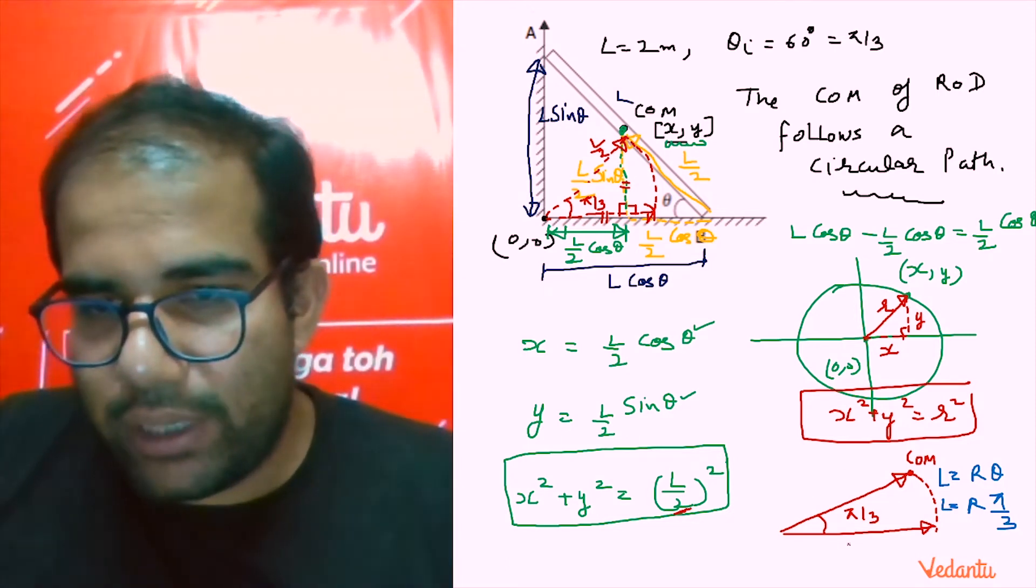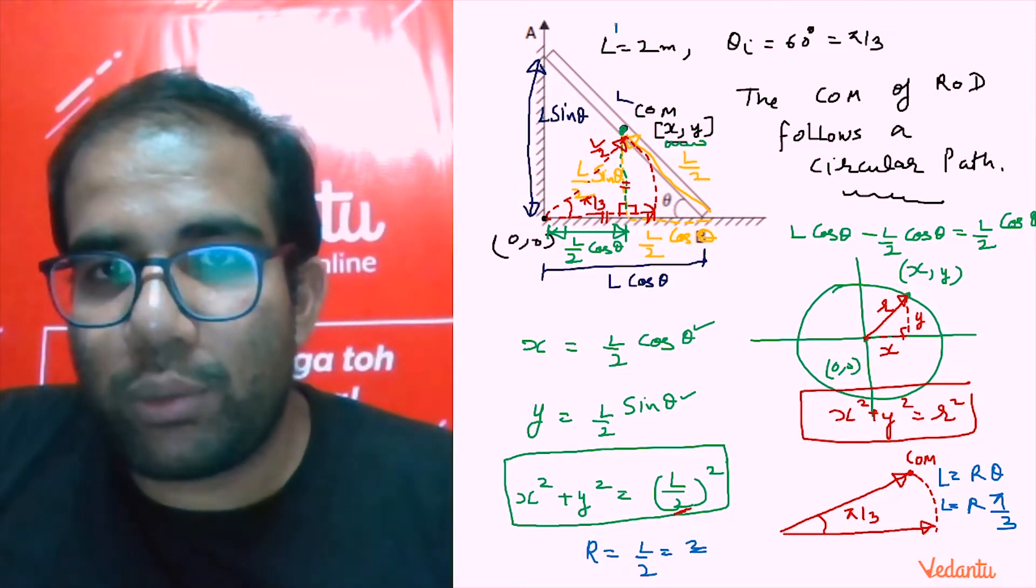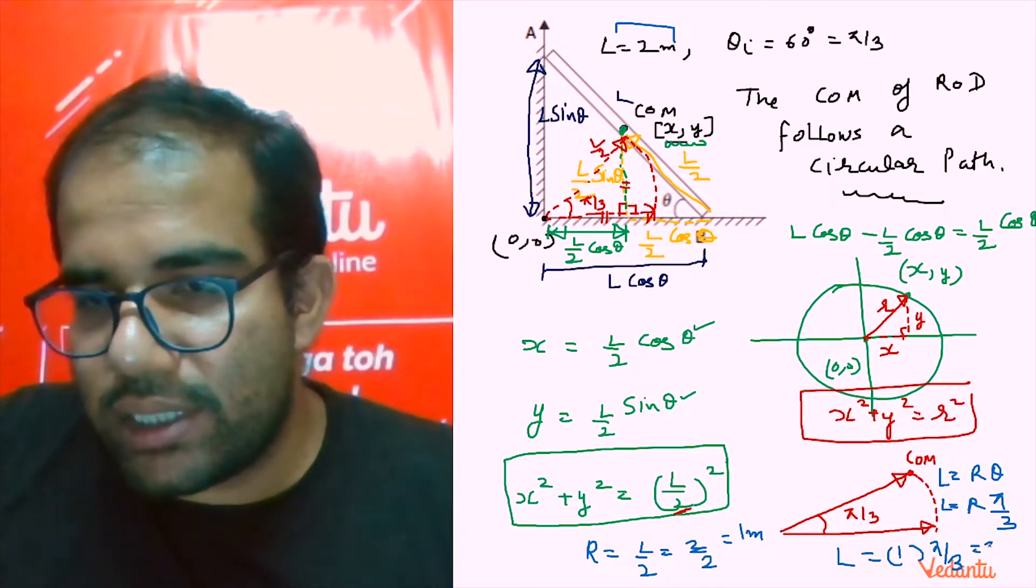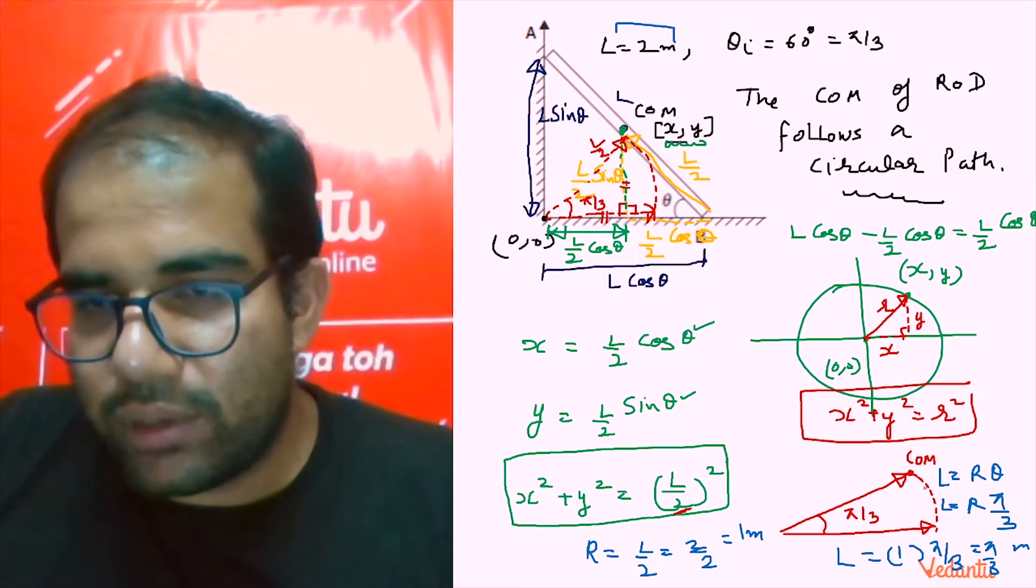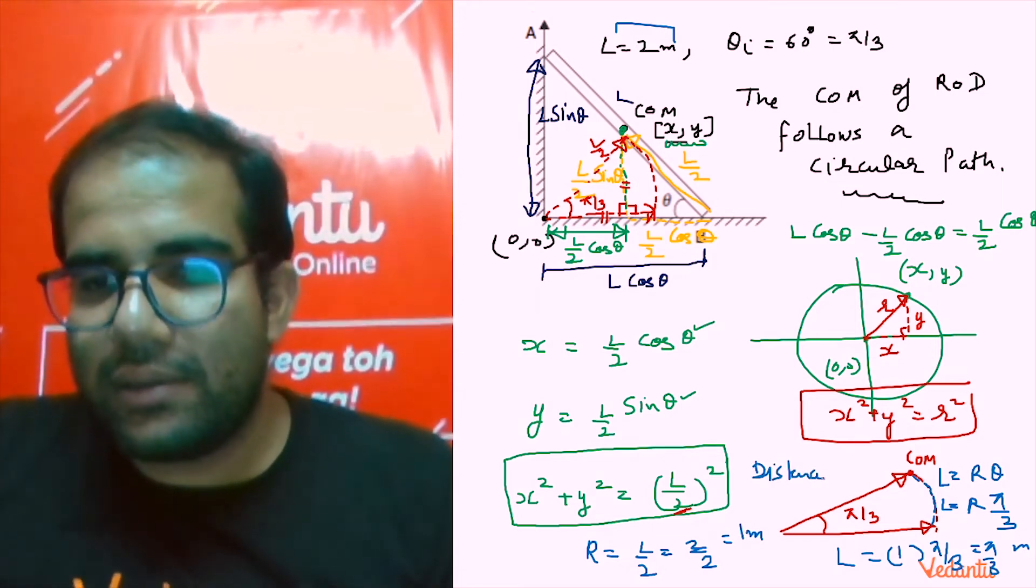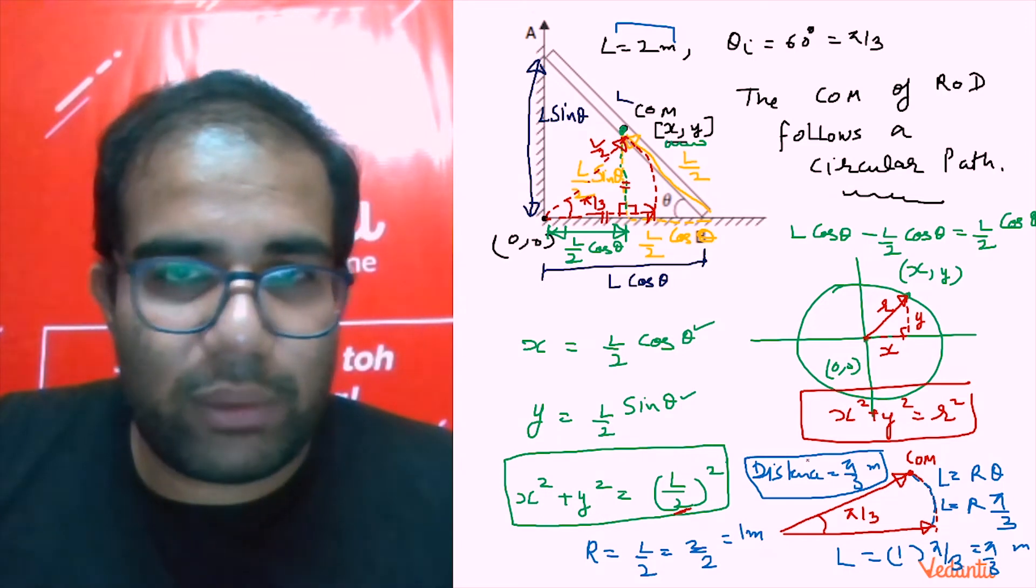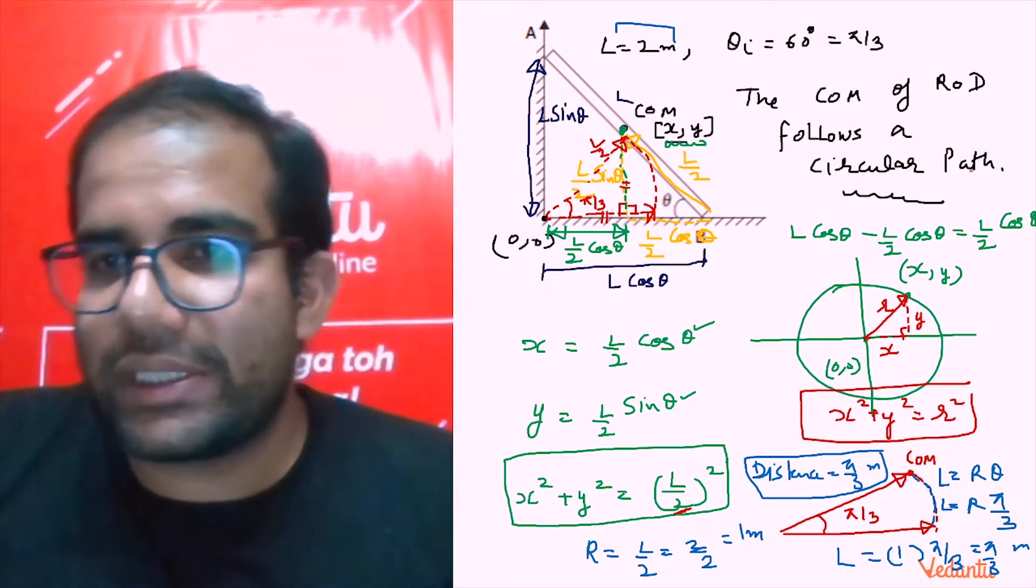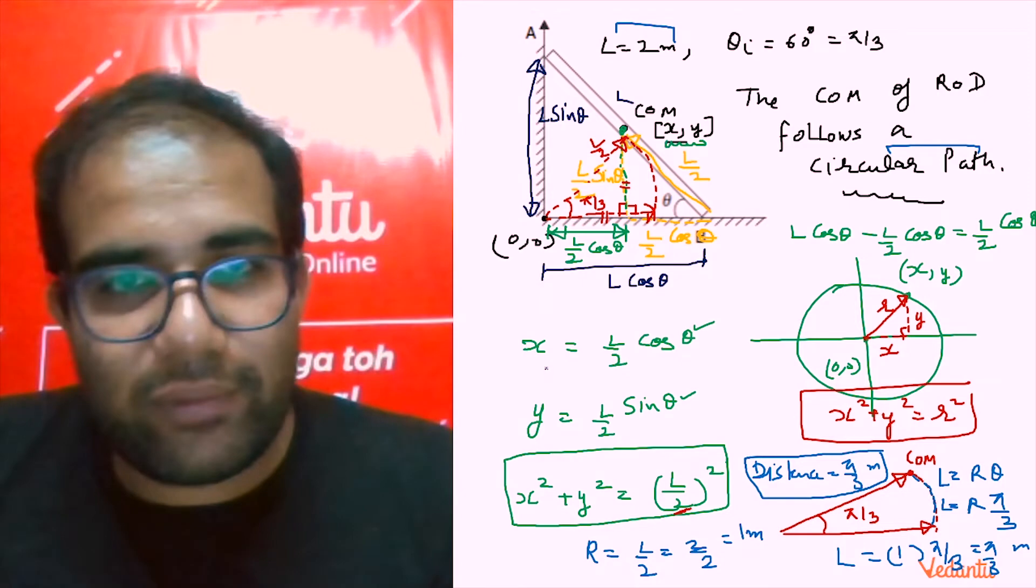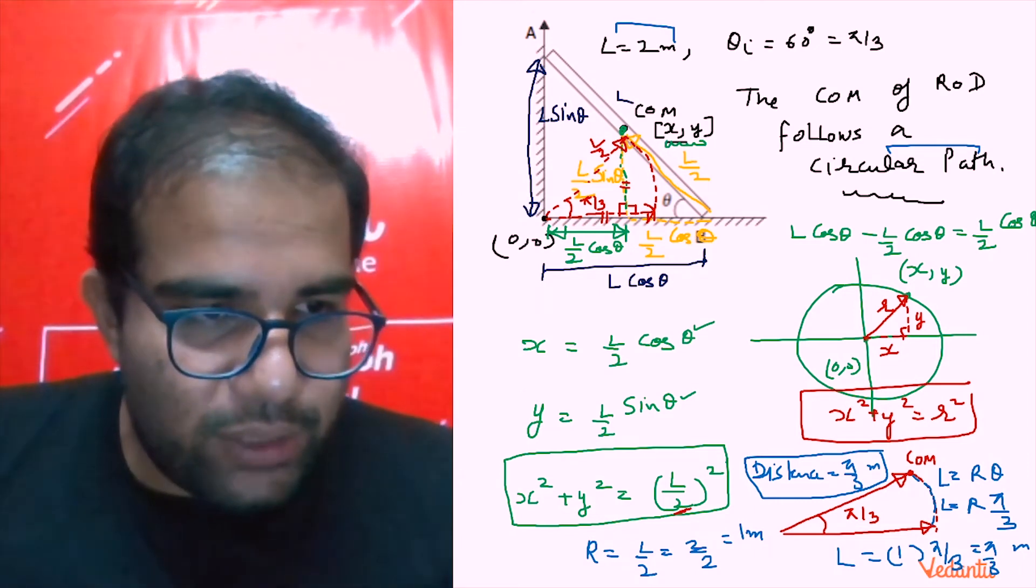The length is equal to r into theta, so r is the radius into theta. The theta is pi by 3, so basically the length moved by it is r into theta and that is r pi by 3. What is the radius? The radius is L by 2, so L is 2 meter, 2 by 2 that comes out to be 1 meter. So radius is 1 into pi by 3, so the distance moved is pi by 3 meter. This is the distance. Isn't it a really beautiful and awesome problem students?